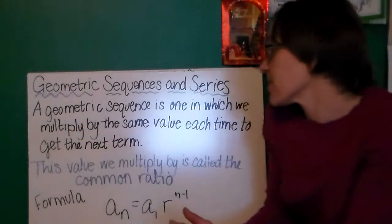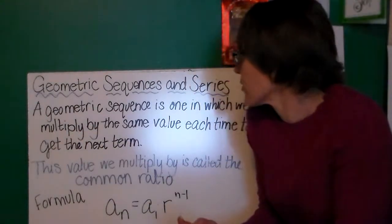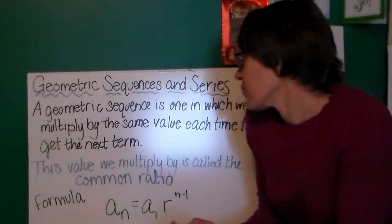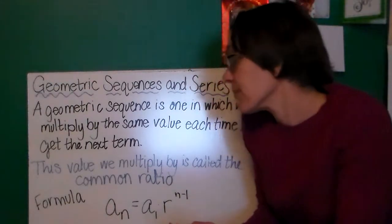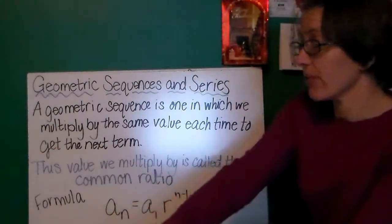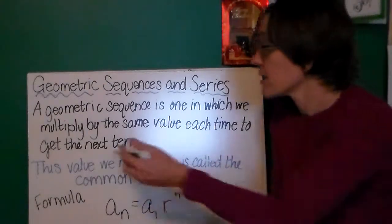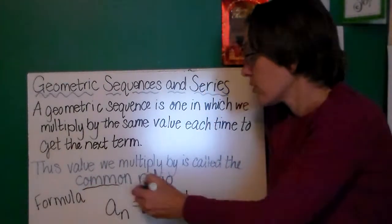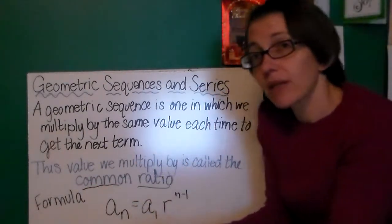As I said, a geometric sequence, that ordered list, is one in which we multiply by the same value each time to get the next term. Remember, this value that we multiply by is called the common ratio.